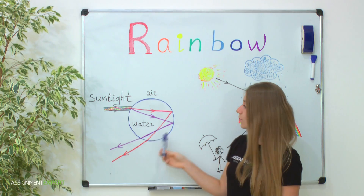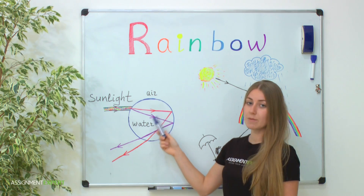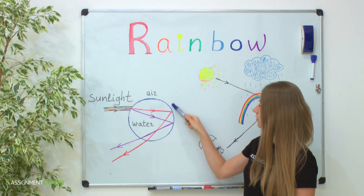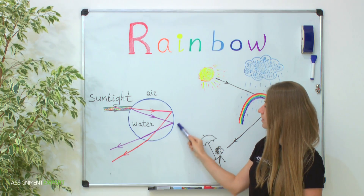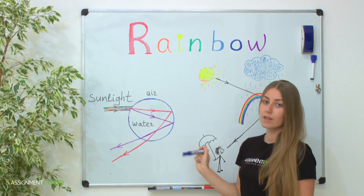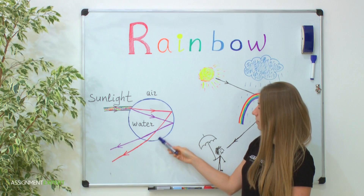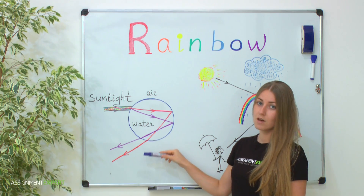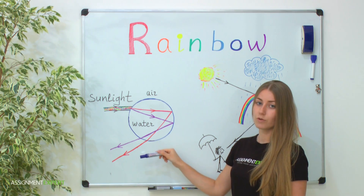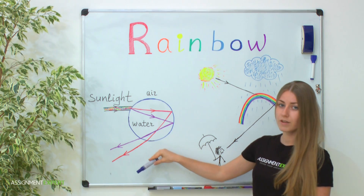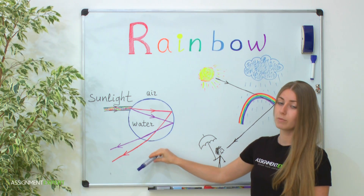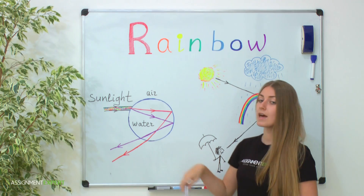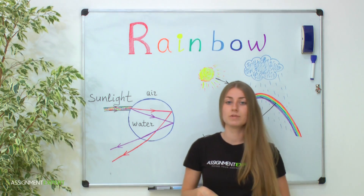Inside a water drop every wavelength moves separately and separately undergoes total internal reflection at the boundary of the drop. Then at the other boundary all the constituents are refracted again, go out from the drop separated even farther apart from one another. Therefore at the exit we will see a full visible spectrum.